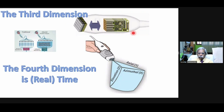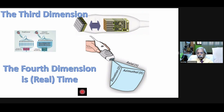Sometimes we call this 4D echo. 4D echo is real-time 3D — time added to the three dimensions is called 4D echo. All these things are possible only by advancements in transducer technology, which has led to this technical advantage.